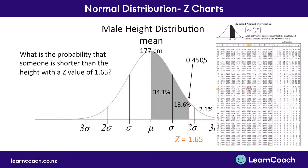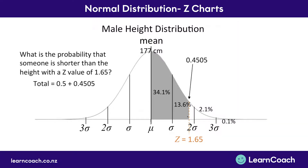Because we've got 0.4505, that means 0.4505 of the population — just a bit less than half — exists between the mean and 1.65 standard deviations away. Therefore, we can work out that if we have 0.5 of the population on the left-hand side of the mean, and we have 0.4505 of the population on the right-hand side of the mean up until the z-score of 1.65, that means there's a total of 0.9505, or 95% of the population, below this height with a z-score of 1.65.